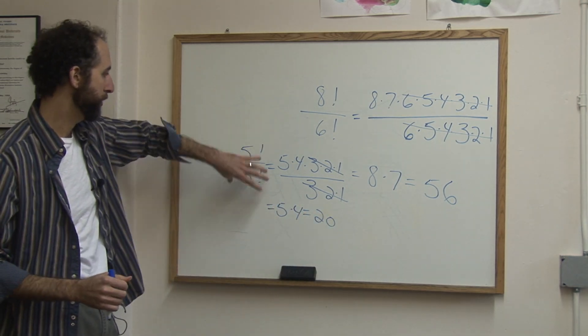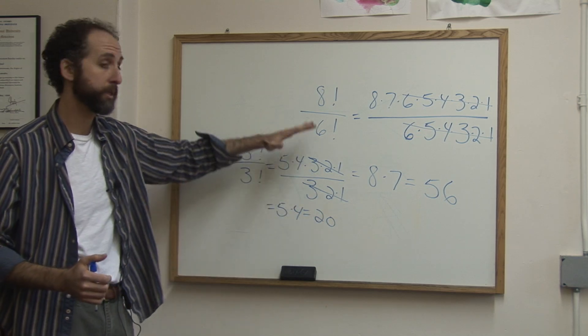Now, if you did this out and you did this out and then you reduced, you'd also get 20, but this is a faster way.